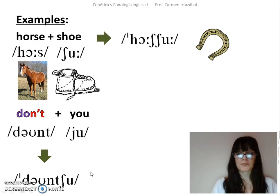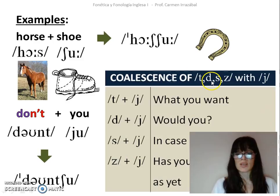In the following table, we can see the usual combinations which produce coalescent assimilation. Now, I'd like you to stop the video and transcribe the sentences phonemically. Then continue watching it and check your answers.